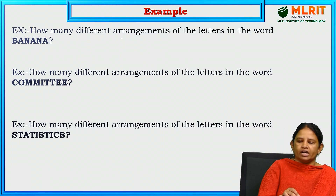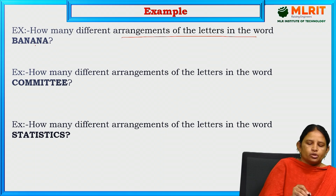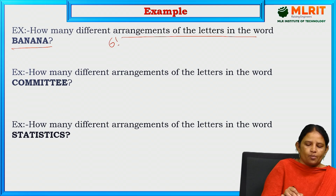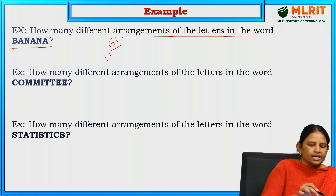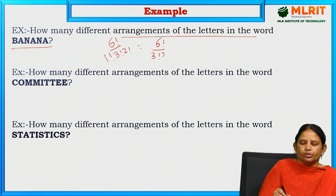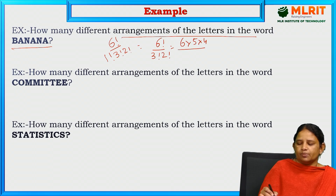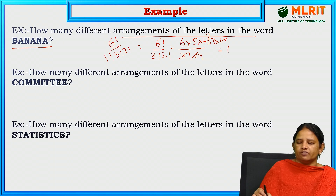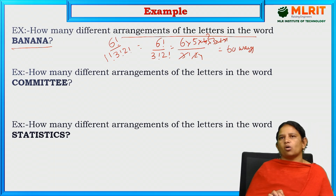How many different arrangements of the letters in the word banana? Total number of letters is 6, so 6 factorial. B is repeated 1 time — 1 factorial; A is repeated 3 times — 3 factorial; N is repeated 2 times — 2 factorial. That is 6 factorial divided by 3 factorial times 2 factorial = 6×5×4×3÷(3×2) = 60 ways to arrange the word banana.